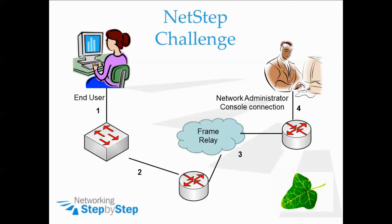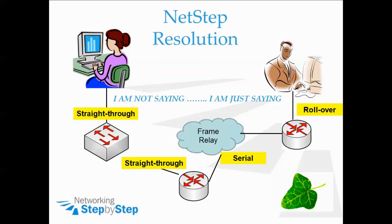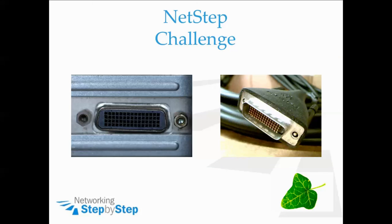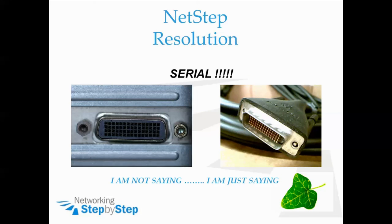We have another NetStep challenge: what kind of cable should be used to make each connection identified by numbers 1 through 4? Number 1: an Ethernet straight-through cable. Number 2: an Ethernet straight-through cable. Number 3: a serial cable. Number 4: a rollover cable. Final cabling challenge: to what type of port would a cable with a DB60 connector attach? A serial port.